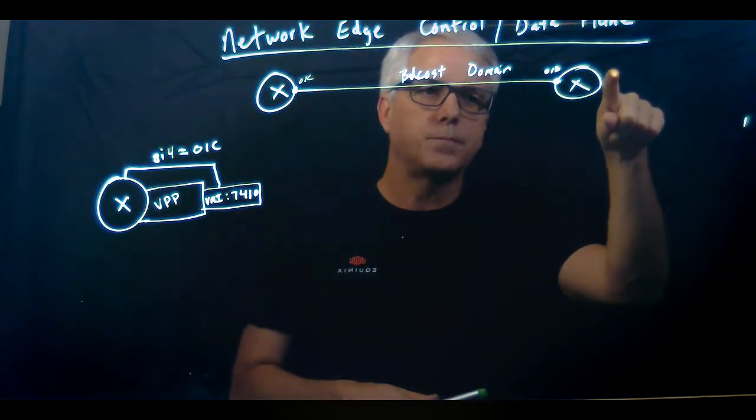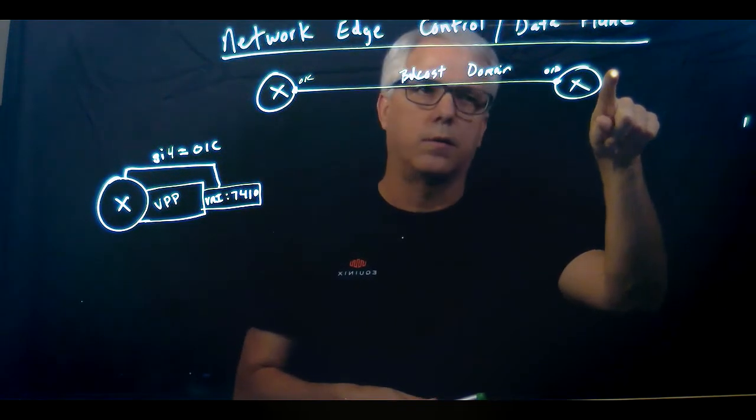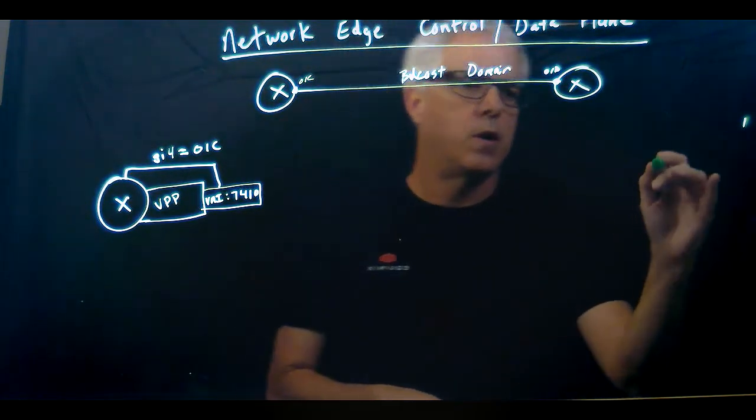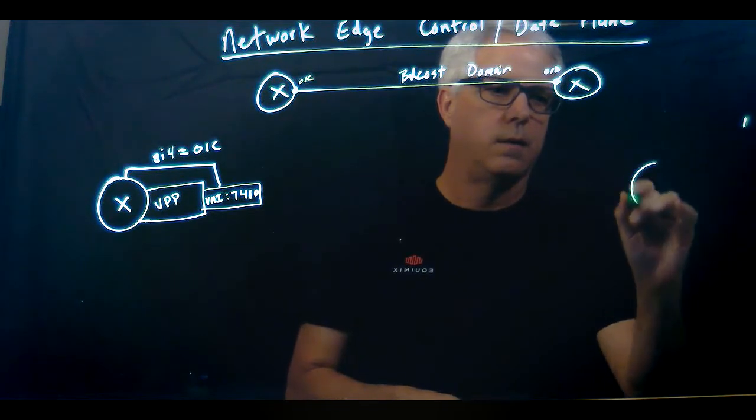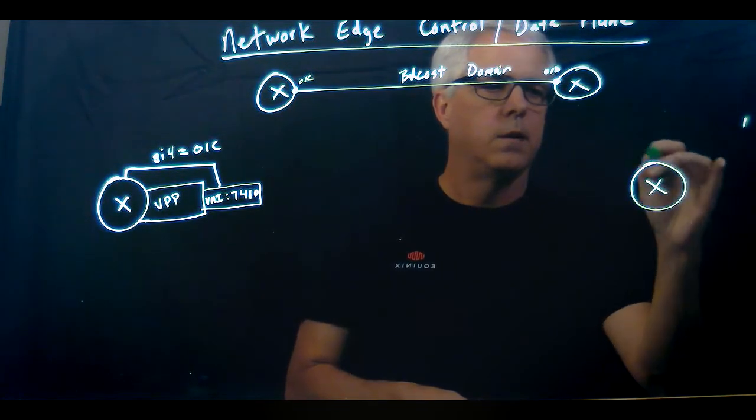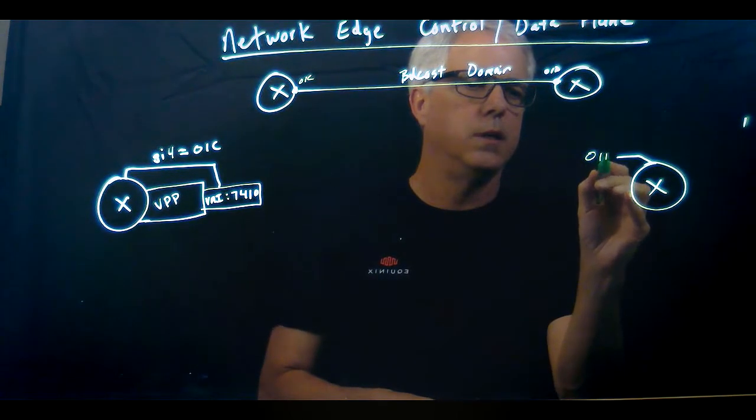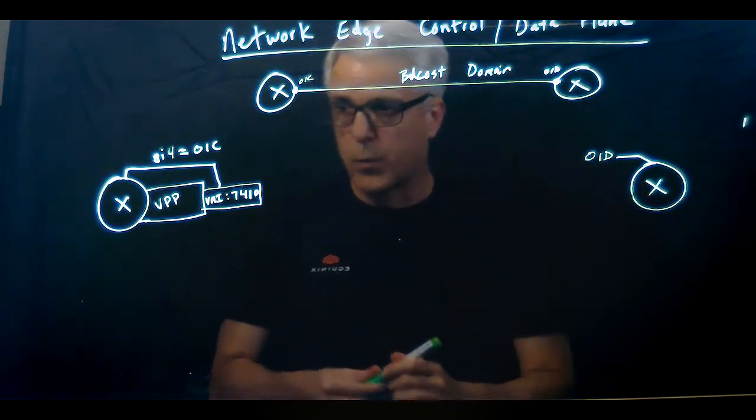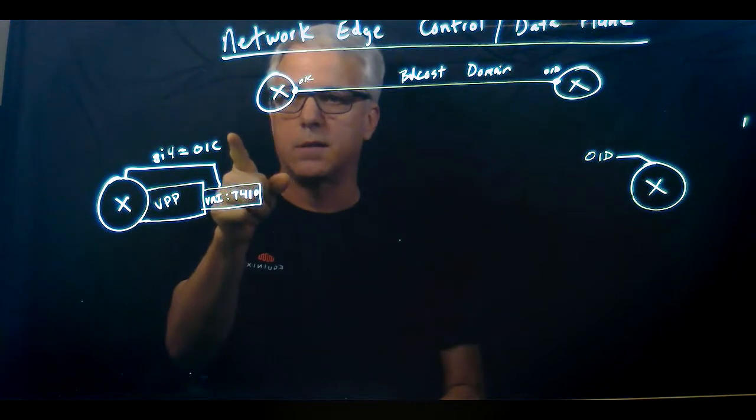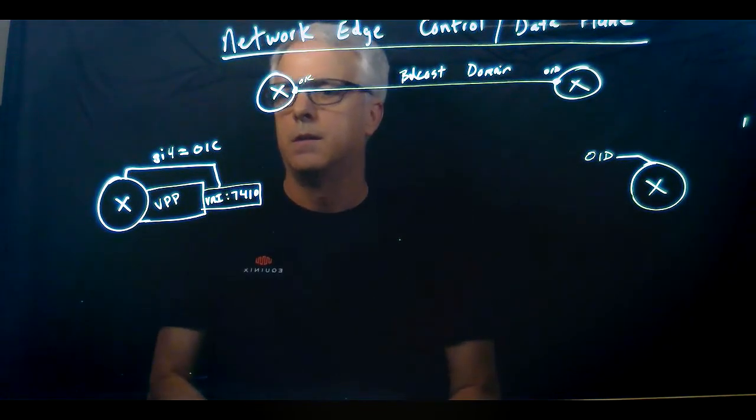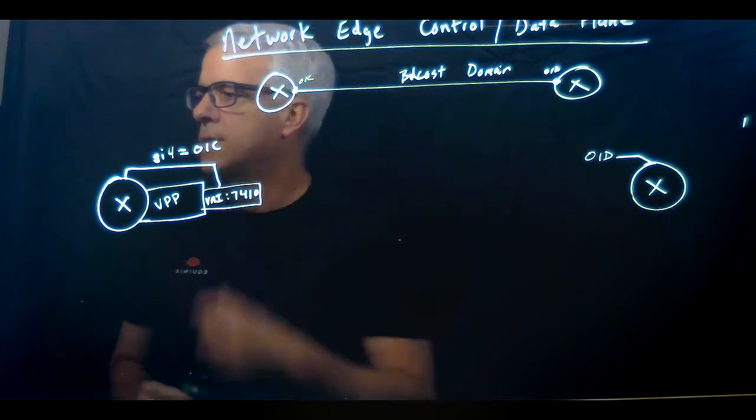If I draw it out on this side, I've got an interface, and this interface has a MAC address of 01D. Again, the whole purpose, what I'm trying to do, is I'm trying to get 01C and 01D in the same broadcast domain. So the way we do that is...